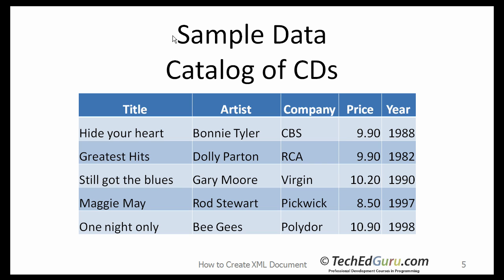Let me show you how to create an XML document from these data. Let's try to understand the data just a little. This is obviously a catalog of CDs. One catalog contains multiple CDs, so the CDs are called the child elements of the catalog element. Catalog is the top level element, or the root element.